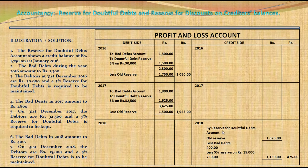For 2018: the reserve brought forward is Rs. 1,625. Less bad debts of Rs. 400 and less 5% reserve on Rs. 15,000 = Rs. 750, both totaling Rs. 1,150. The difference of Rs. 475 is regarded as a gain on the credit side of the Profit & Loss Account during 2018.